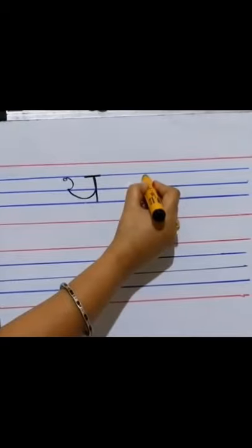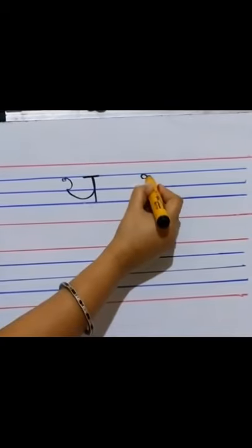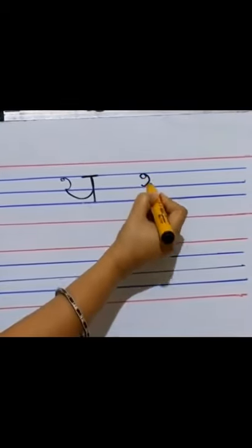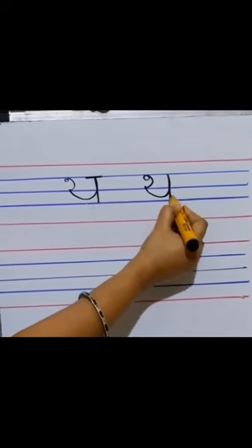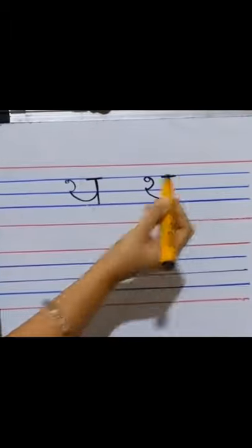Again, please see: a circle. From the circle make a small C. Make a U, go up, come down, and a sleeping line on top.